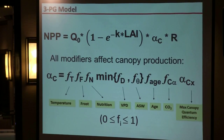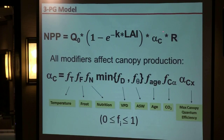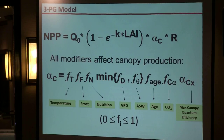Incoming global radiation Q is transformed to PAR radiation, and using the leaf area index of the stand, that radiation is converted to intercepted radiation. Applying the canopy quantum yield factor, we calculate GPP; discounting respiration gives us net primary productivity. The quantum yield is not constant — it is affected by temperature, frost, nutrition, vapor pressure deficit, available water, age, and CO2 concentration. There is a theoretical maximum canopy quantum yield, but trees never achieve that value; all the modifier factors are values between 0 and 1.